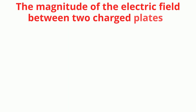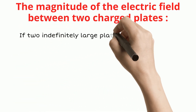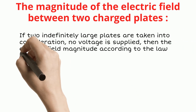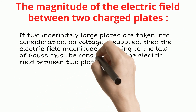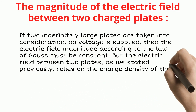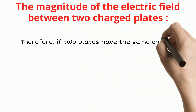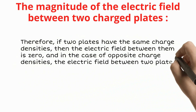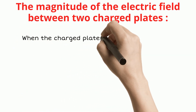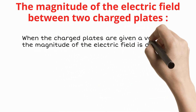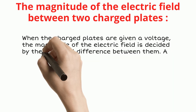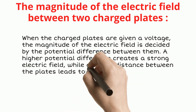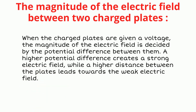The magnitude of the electric field between two charged plates: if two independently large plates are considered and no voltage is supplied, then the electric field magnitude must be constant according to Gauss's law. The electric field between two plates relies on the charge density of the plates. If two plates have the same charge density, the electric field between them is zero. For opposite charge density, the field is constant at sigma upon epsilon zero. When voltage is applied, the magnitude is decided by the potential difference — a higher potential difference creates a stronger field, while a greater distance between plates leads to a weaker field.